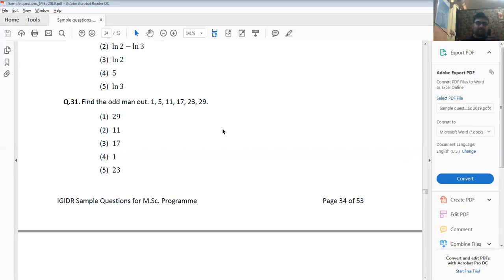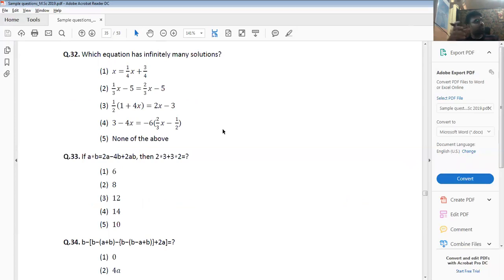Whenever there is a dispute, they will basically give you the options accordingly, so you will be able to understand what should be the answer. Which equation has infinitely many solutions? Answer will be the fourth one. Both of them are the same. The LHS and RHS are the same. RHS, if you simplify, you will get 3 minus 4x, same.